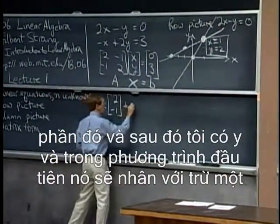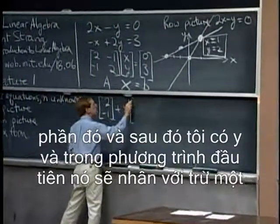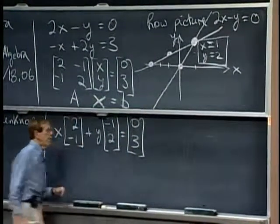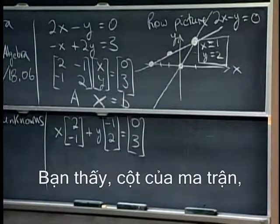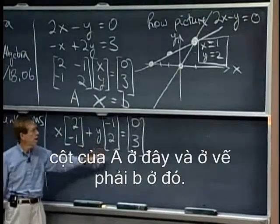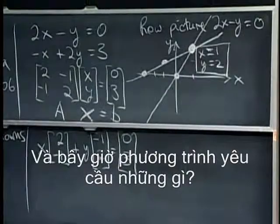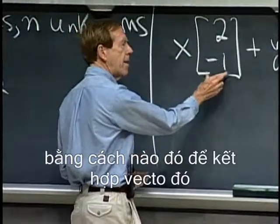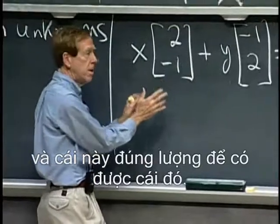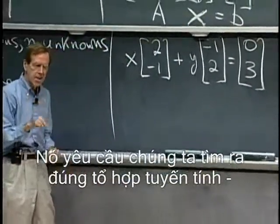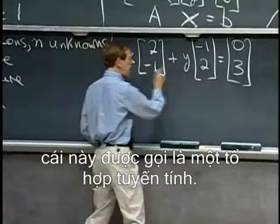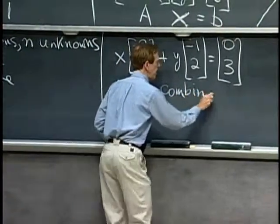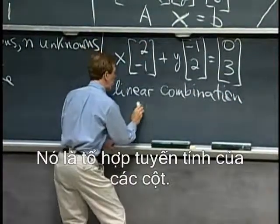That part, and then I have a y, and in the first equation it's multiplying minus one, and in the second equation a two. And on the right-hand side: zero and three. The columns of A are here and the right-hand side B is there. The equation is asking us to somehow combine that vector and this one in the right amounts to get that one — to find the right linear combination. This is called a linear combination, and it's the most fundamental operation in the whole course.